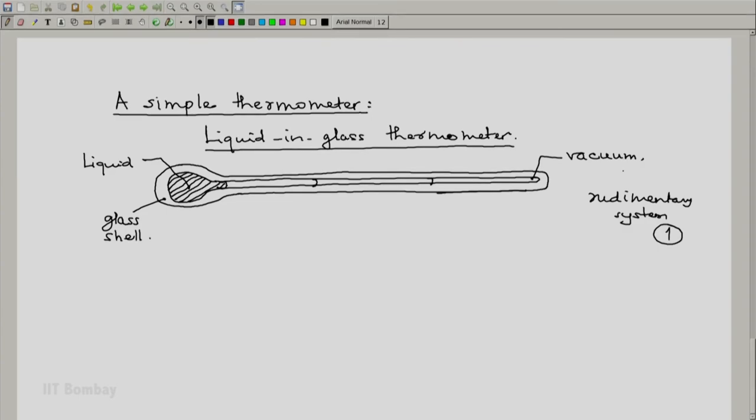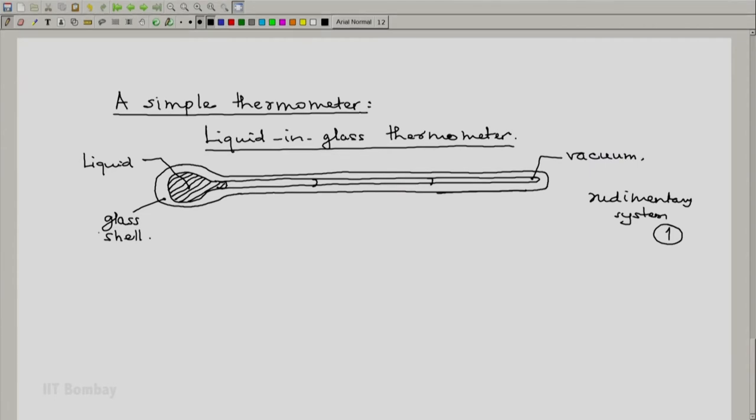Now using this, how do we label isotherms? For the labeling, we have to prepare a scale. The simplest scale which is still used is Celsius scale. We will take this as an example. And what I will provide you is the historical development of the Celsius scale.